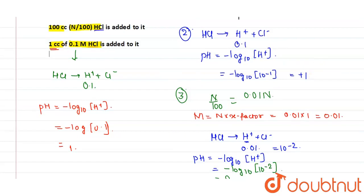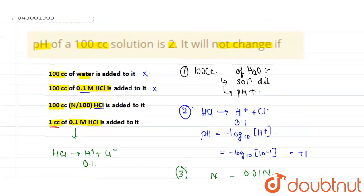The correct answer is 100 cc of N by 100 HCl is added to it. Thank you.